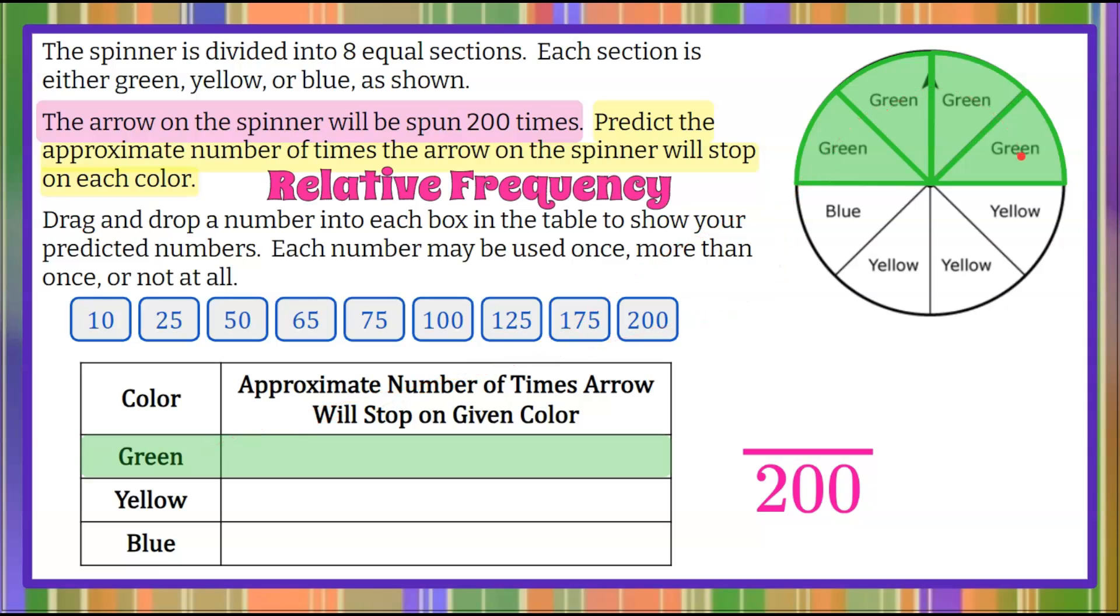Four of our sections of our spinner are green. That's our desired outcome. So our ratio is going to be four of our outcomes out of a total of eight are our desired outcome to get green. So we have a four in eight chance of spinning that.